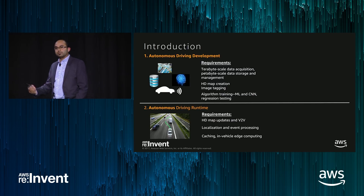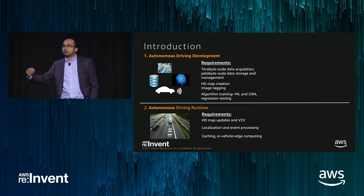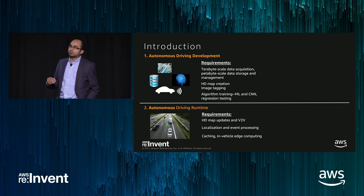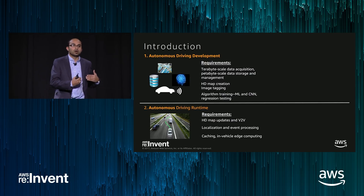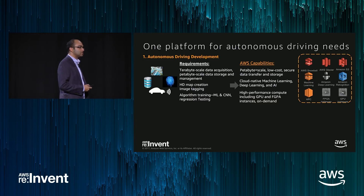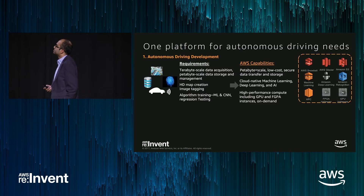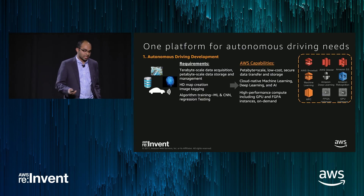So how does AWS fit into this picture? For terabyte-scale data acquisition, we have services like S3 and Glacier for storing and archiving data. But a single car can accumulate up to 20 terabytes of data in a day, and that's not the best way to transport data to the cloud. Snowball is a great way to get data in securely, cheaply, and fast into S3. For map creation and analytics, Amazon SageMaker — announced today — automates the entire training pipeline, from development through training and inference on AWS.